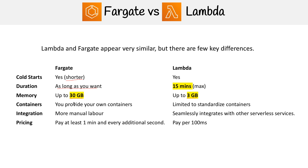The last thing is pricing. With Lambda, you're paying per 100 milliseconds, whereas with Fargate you're paying at least one minute and then every additional second. The amount of memory and CPUs you use also factor in. The key takeaway is Lambda is billed per 100 milliseconds, and Fargate is billed per one minute plus every additional second.